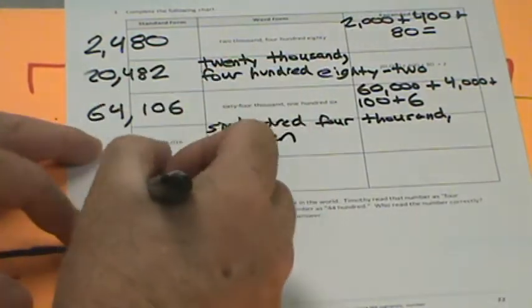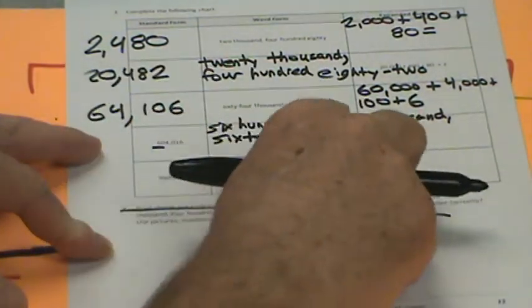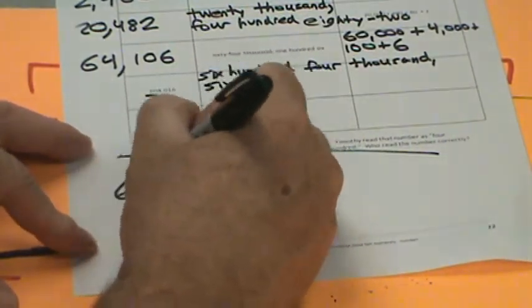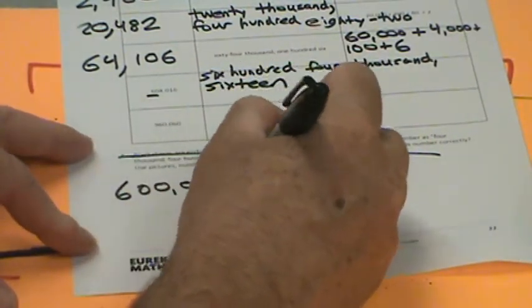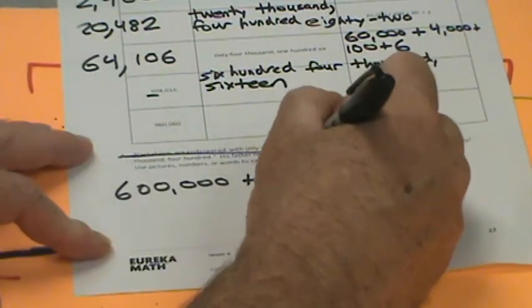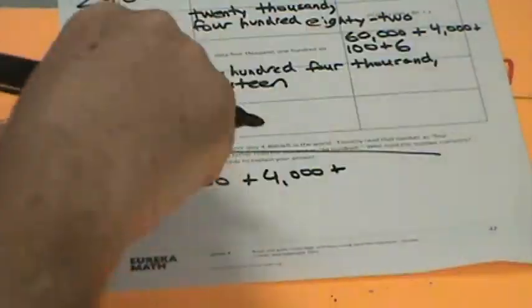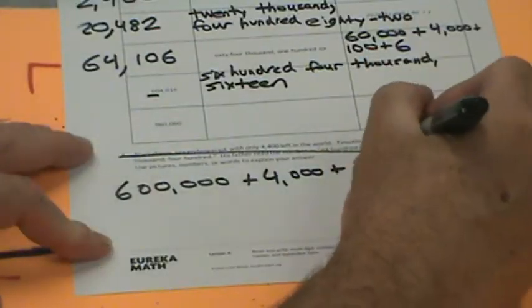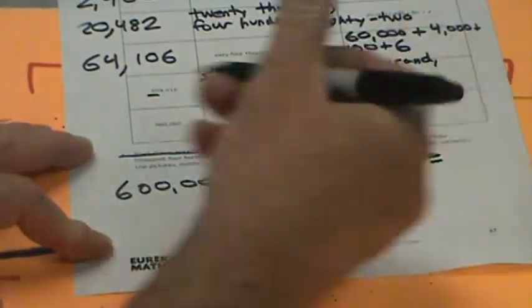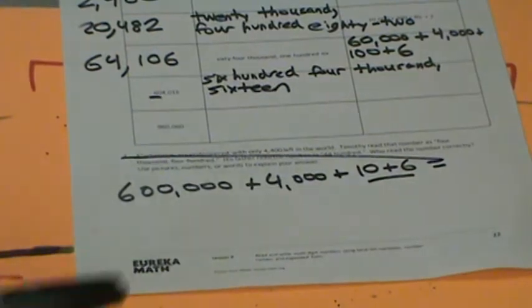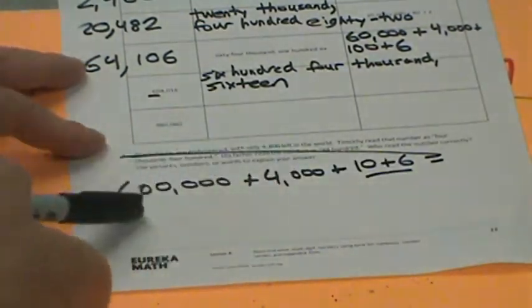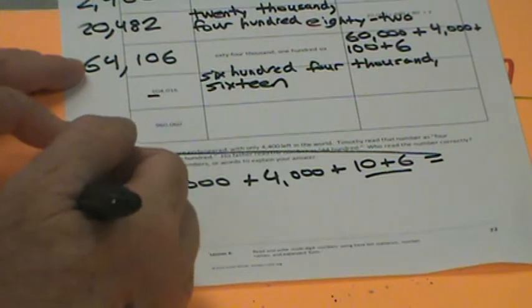Now let's write the expanded form: 600,000, there's no ten thousands, so plus 4,000, plus what? We don't put 16 there, we put 10 because there's one ten, plus 6. That's really important. I almost messed up on that. So 10 plus 6, we have 604,016.